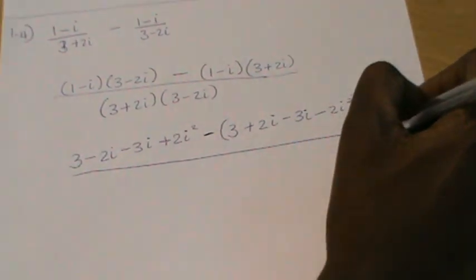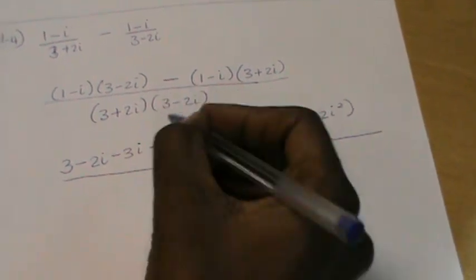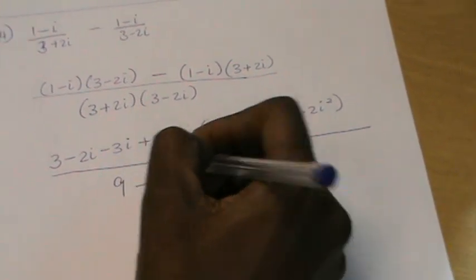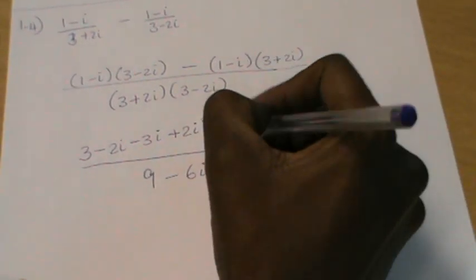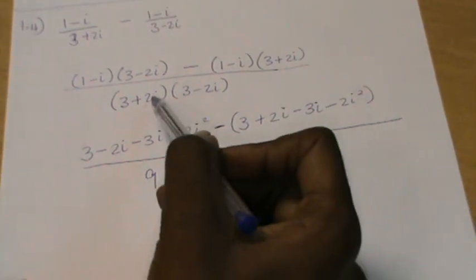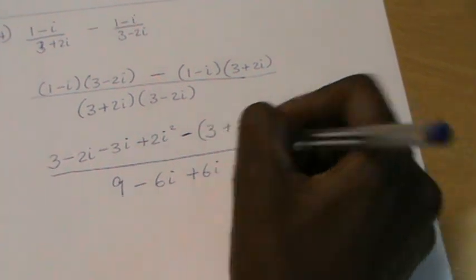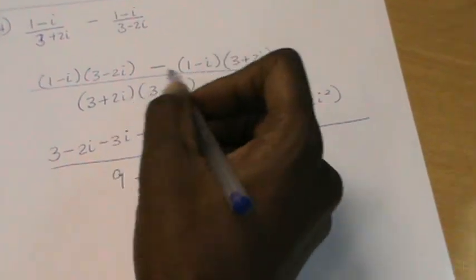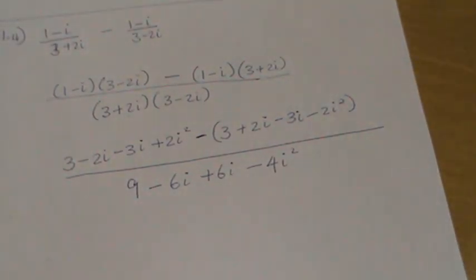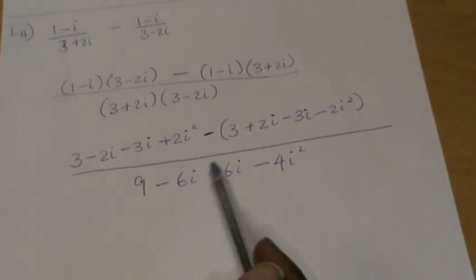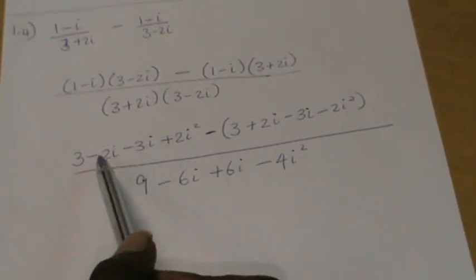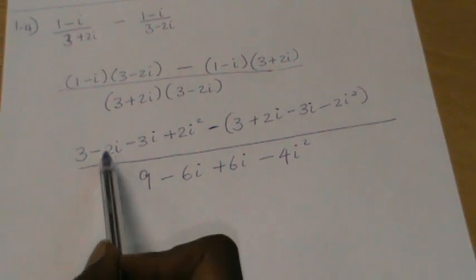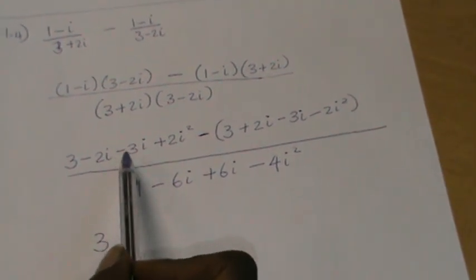In the denominator, I have 3 times 3 which is 9. Then 3 times minus 2i is minus 6i. Then 2i times 3 is plus 6i. And then 2i times minus 2i — that's a positive times a negative, so this is negative 4i squared. Then I simplify and collect any like terms.